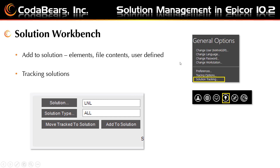To start really using a solution, you need to open Solution Workbench and create a solution by giving it a name, description, and choosing the solution type. Then you can choose to add to the solution to add already existing elements such as BAQs, dashboards, reports, etc. Add existing file contents and add existing user defined items such as adapters and results. Or once you have chosen to start tracking a solution, you can choose to add the tracked items to your new solution for items that do not yet exist or changed items.